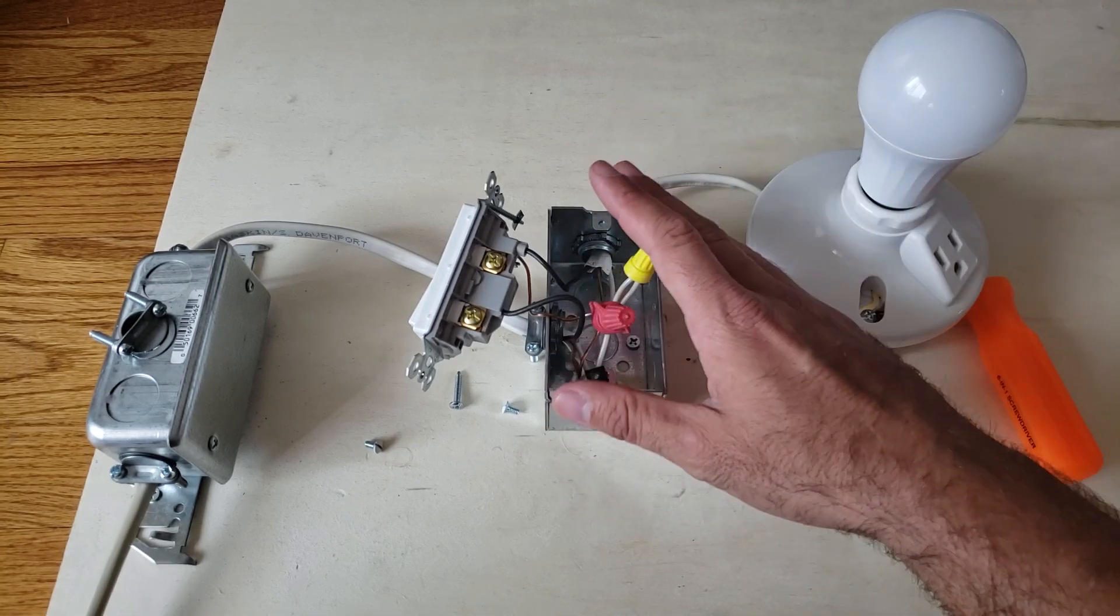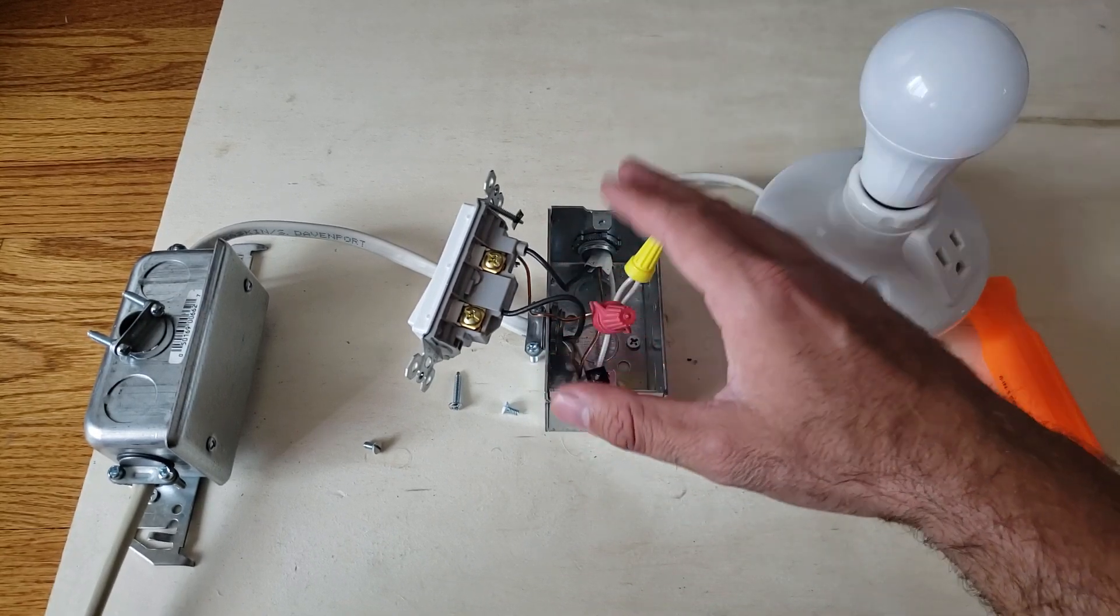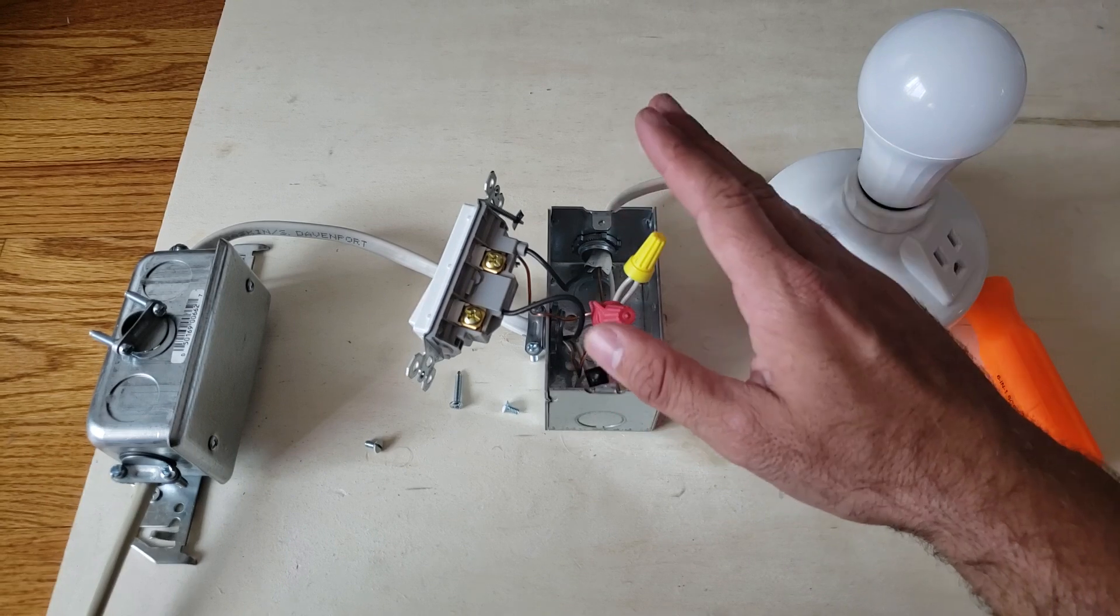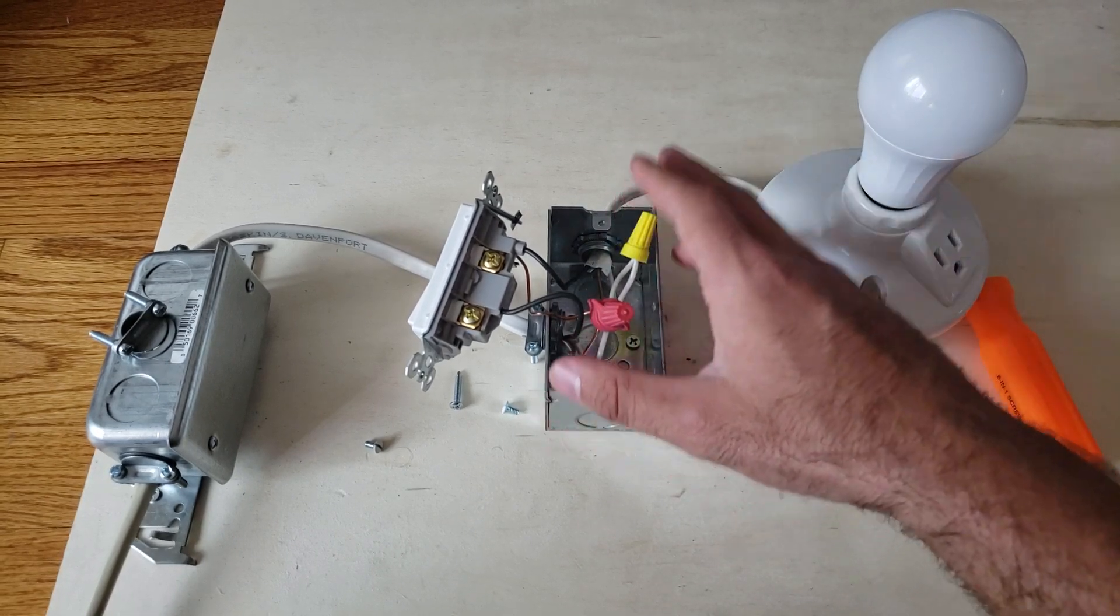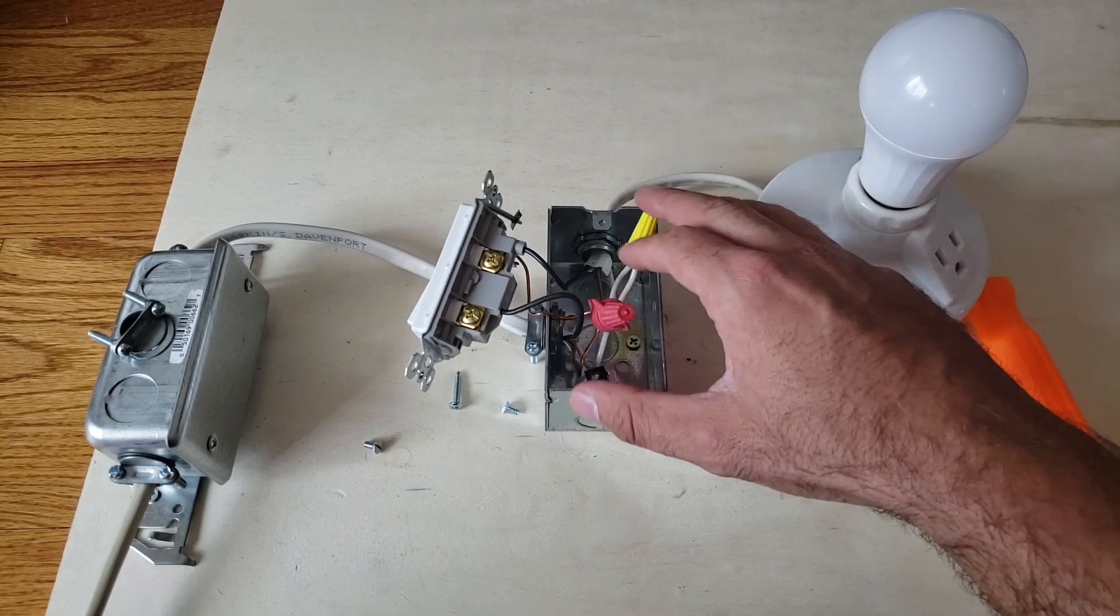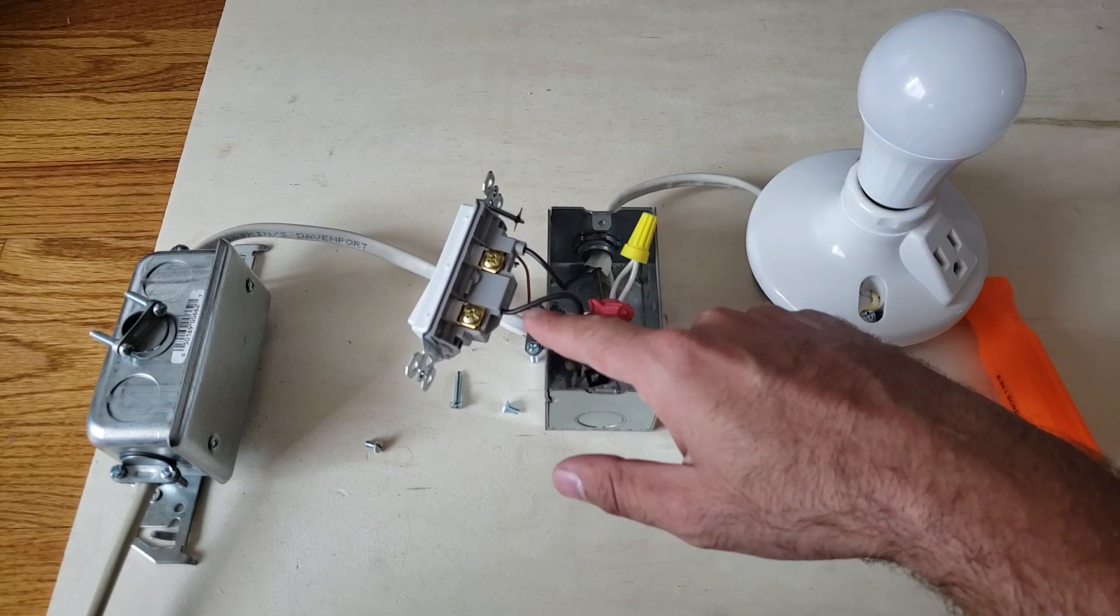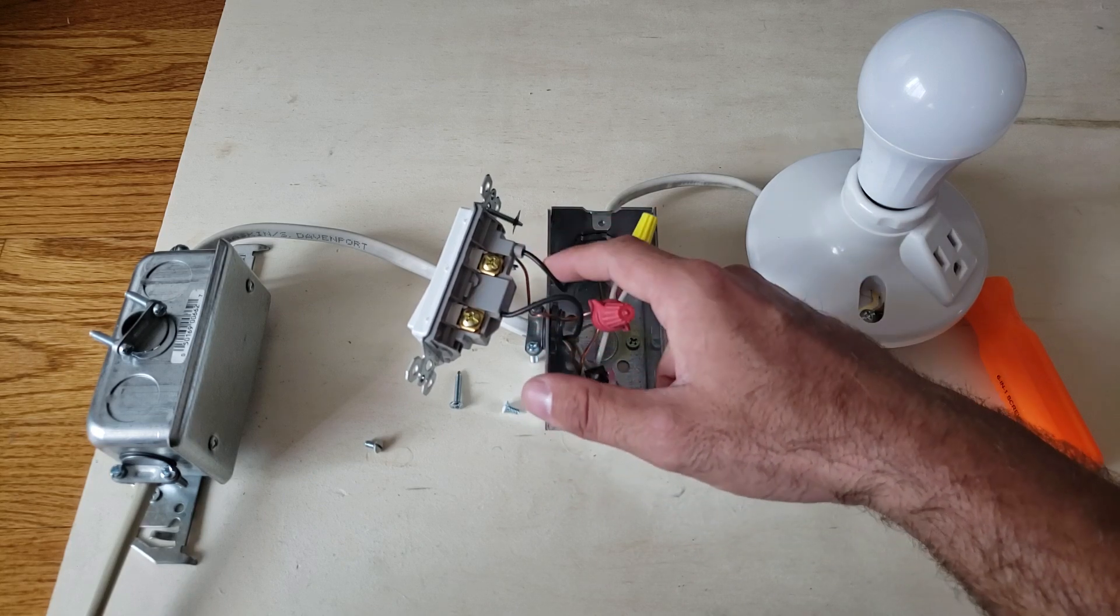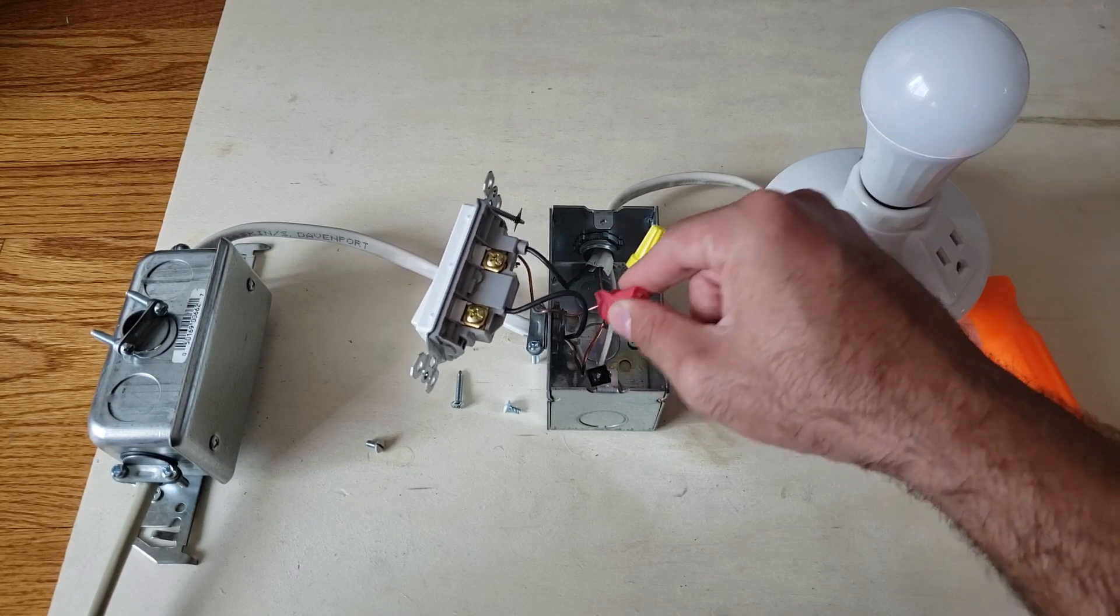That is what you need in order to install a smart light switch in a lot of cases. This particular junction box, this wiring, does have a neutral wire. So you could install pretty much any smart light switch you want because you have a neutral wire here available. You've got your hot, you've got your load wire, you've got a neutral wire available, and then you've got your ground wires here.